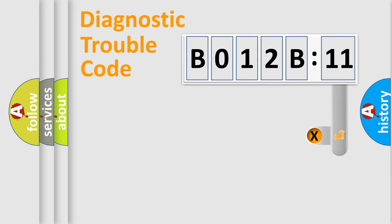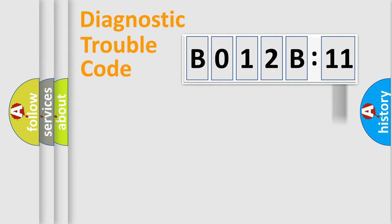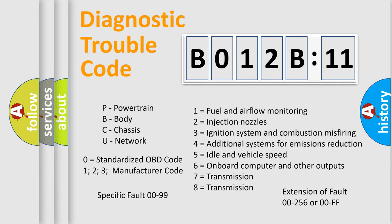The add-on to the error code serves to specify the status in more detail — for example, a short to ground. Such a division is valid only if the second character code is expressed by the number zero.